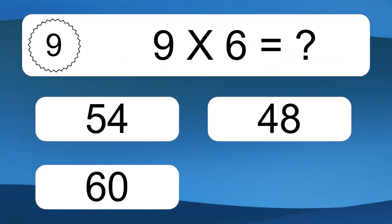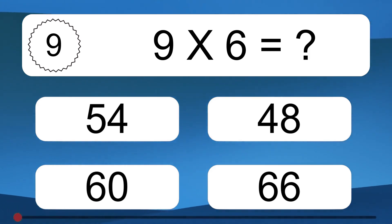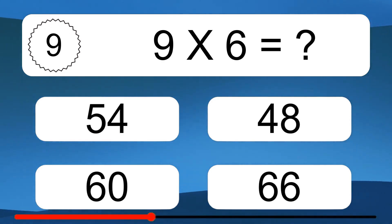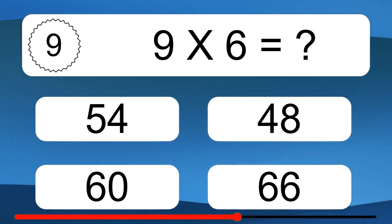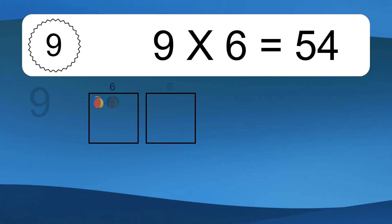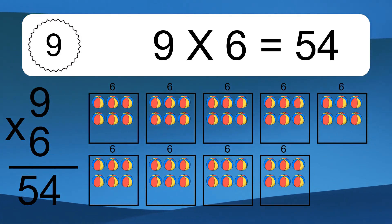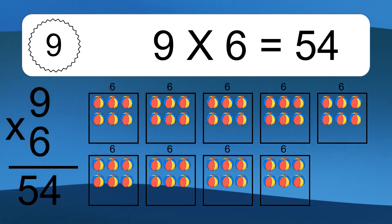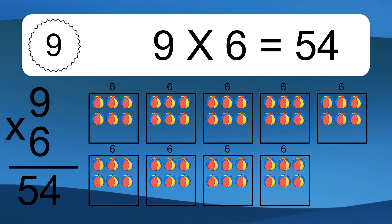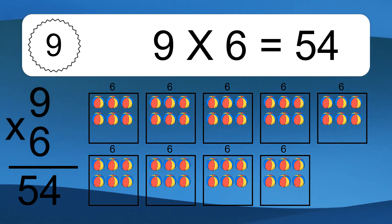9 times 6 equals what? We have 9 boxes, and each box has 6 colorful balls inside. 9 times 6 equals 54.